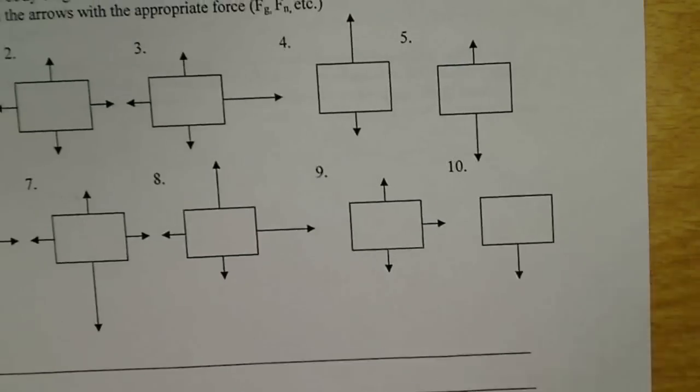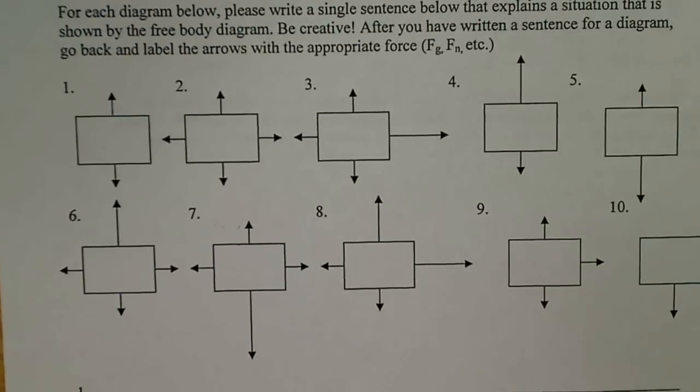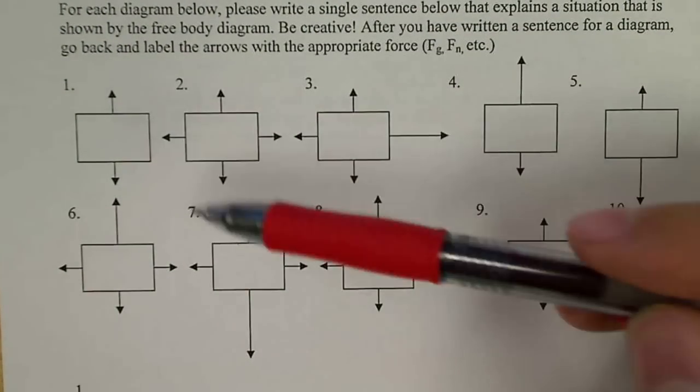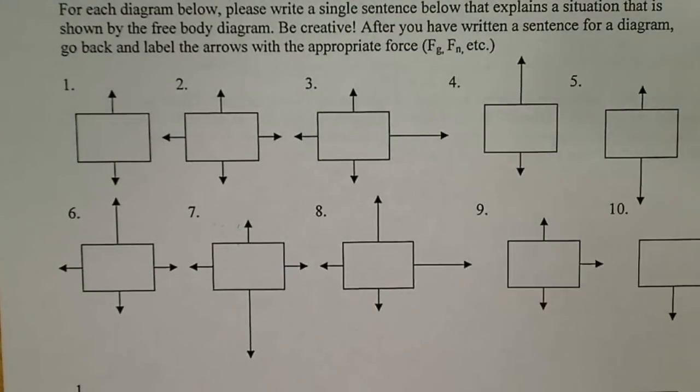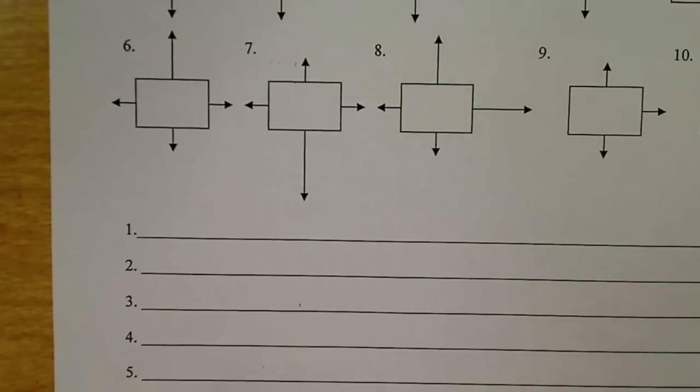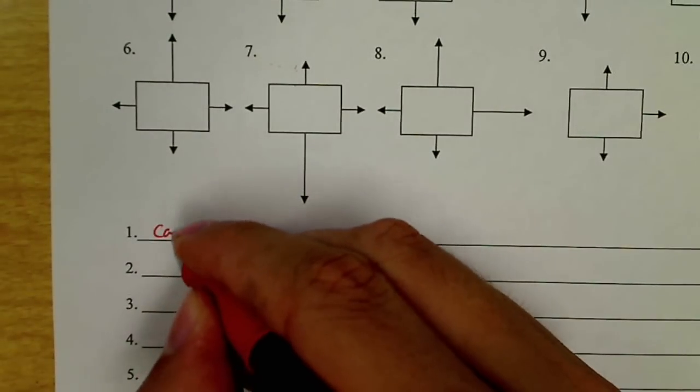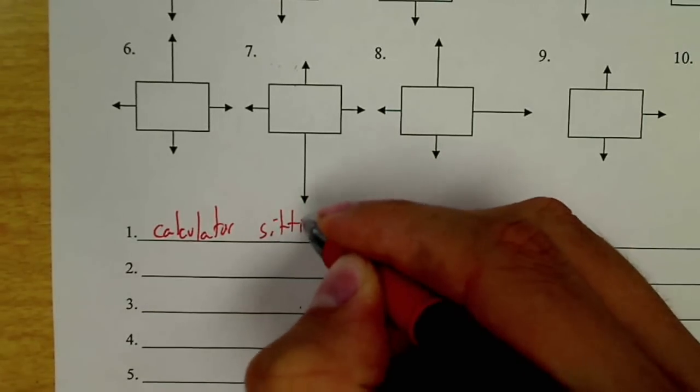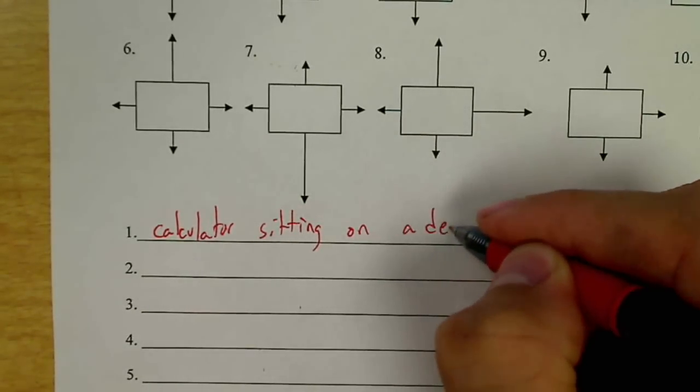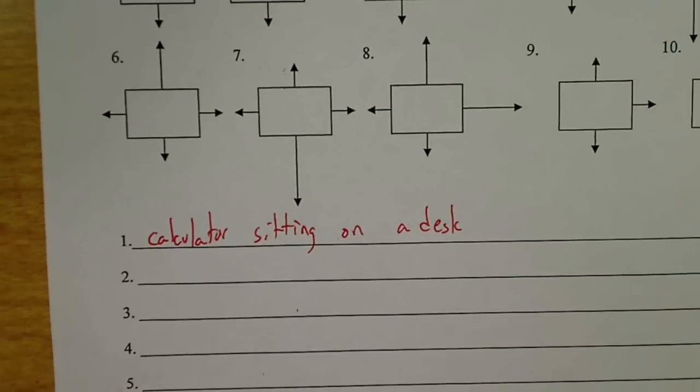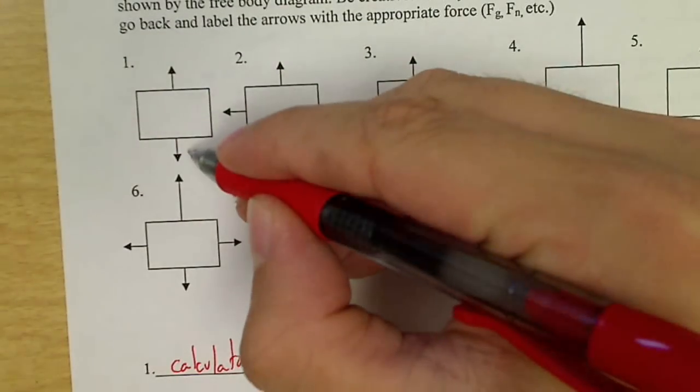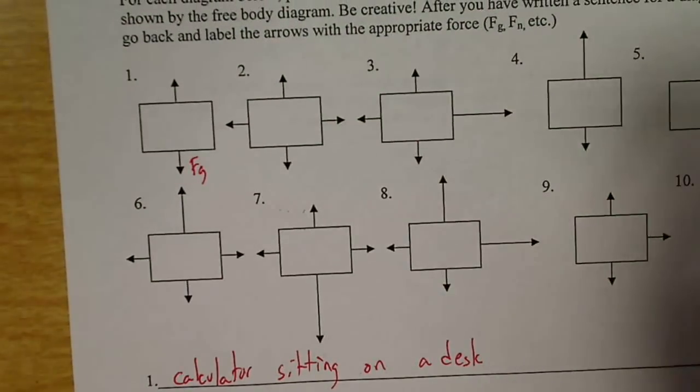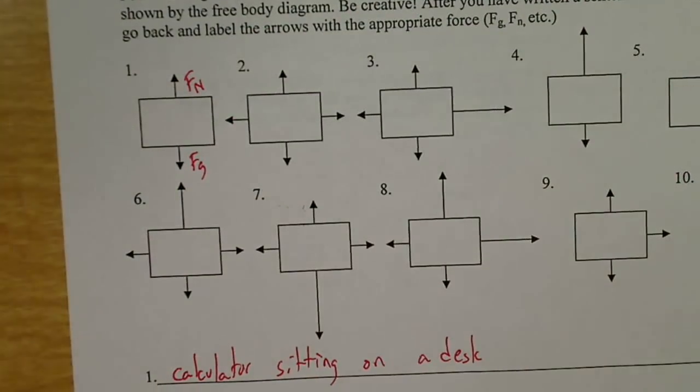So let's try doing it backwards. If we look at the scenario, number one, this could be a thousand different things. So we could say number one is a calculator sitting on a desk. And then that would be, that's Fg, and that's Fn.